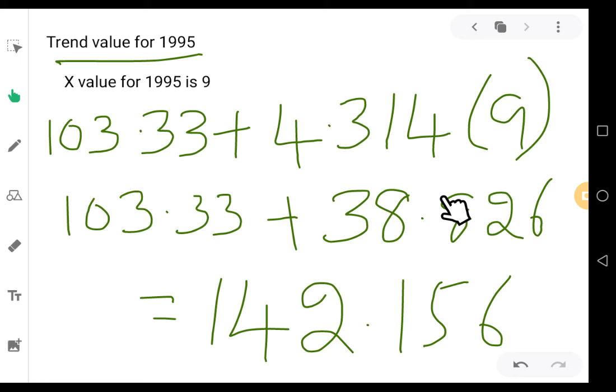Use the formula y equals a plus bx: 103.33 plus 4.314 times 9. 4.314 times 9 equals 38.826. The final estimated value is 142.156, which is the estimated production for the year 1995.